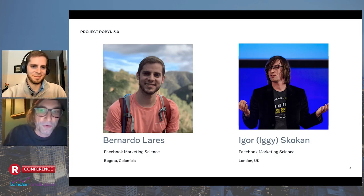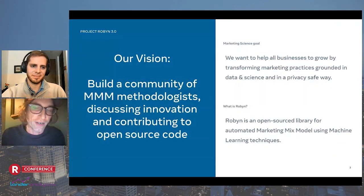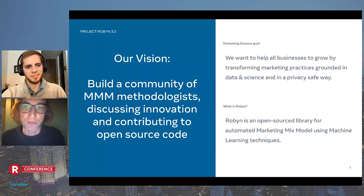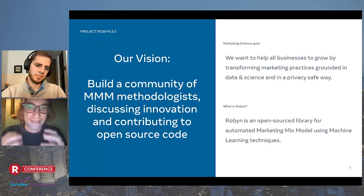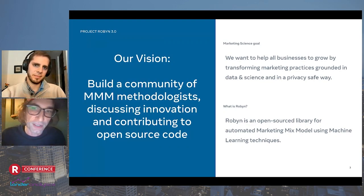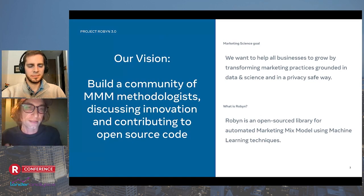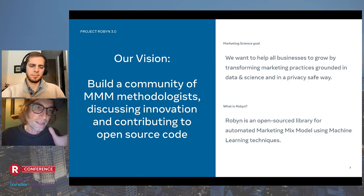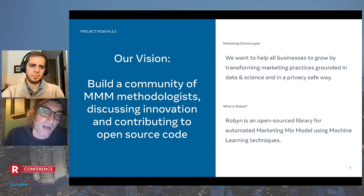We are both from the marketing science team at Facebook. In general, Facebook is a very mission-driven company — to give people the power to build community and bring the world closer together. But the mission and goal of marketing science inside Facebook is we want all businesses to grow by transforming their marketing practices grounded in data and science, and do it in a privacy-safe way. This is where the idea of Robin, this open source library, came from.